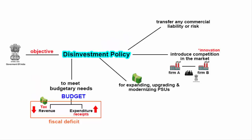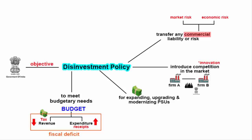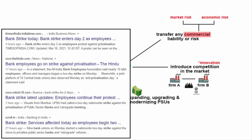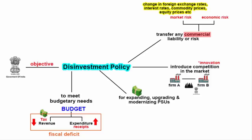Another reason behind disinvestment is to transfer commercial liability or risk. Commercial risks can be broadly divided into economic risks and market risks. An example of economic risk is employee monetary benefits — people like government jobs primarily because of government benefits and perks. Some banks on the government's disinvestment list have seen employees protesting because once privatized, employment terms will be redrafted according to the private sector, meaning the government will no longer bear employee liabilities. Market risks involve changes in foreign exchange rates, interest rates, commodity prices and equity prices — and the government does not want to bear these risks.